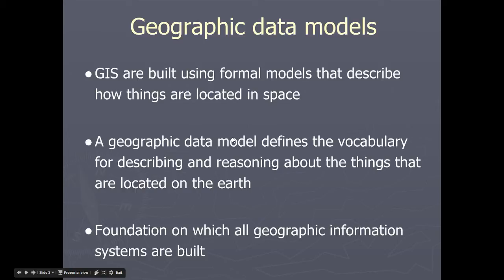This course and geographic information systems in general are all about geographic data models. Geographic information systems are built using formal models that describe how things are located in space. A geographic data model helps us better understand and describe how things are located in the world around us. It defines the vocabulary for describing and reasoning about things located on the earth. These are the foundation on which all geographic information systems are built.